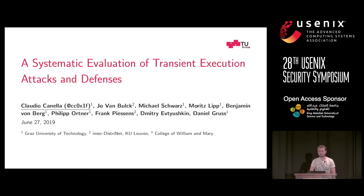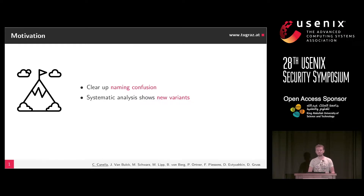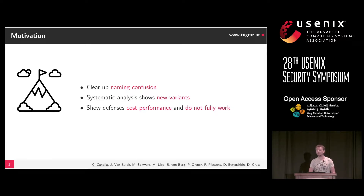I want to start with a bit of motivation for what we wanted to achieve in this paper. In the whole field of transient execution attacks, we have a very confusing naming scheme with variant 1, variant 2, foreshadow, and at one point it becomes very confusing. So we wanted to present a new classification that makes more sense. We also wanted to do a systematic analysis to show that there are still new variants out there. There are also a lot of defenses — they cost performance — and we wanted to show how much performance they cost and whether they actually work. And we also wanted to do a prevalence analysis in the Linux kernel: how many Spectre gadgets are actually there.